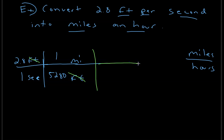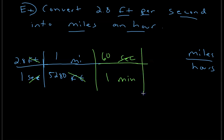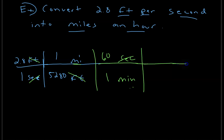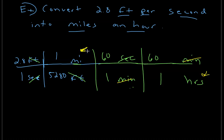Now convert seconds to hours. In one minute there are 60 seconds, so place seconds on the bottom and 60 minutes on top — seconds cancel, leaving miles per minute. Then convert minutes to hours: put 60 minutes on top and 1 hour on the bottom. Minutes cancel, leaving miles per hour.